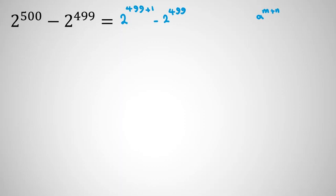And we know that a to the n plus m equal to a to the n times a to the m. So first part is 2 to the 499 times 2 to the 1 minus 2 to the 499.